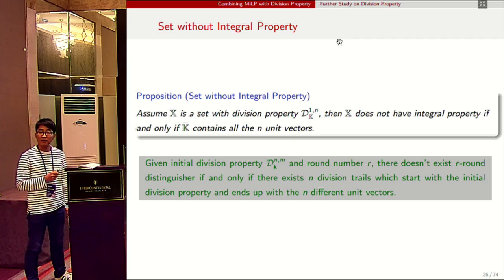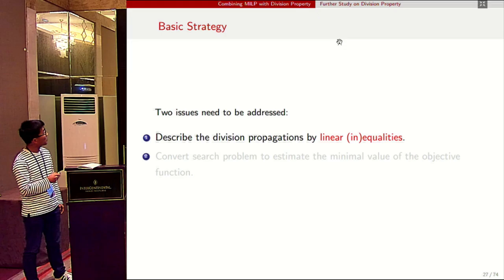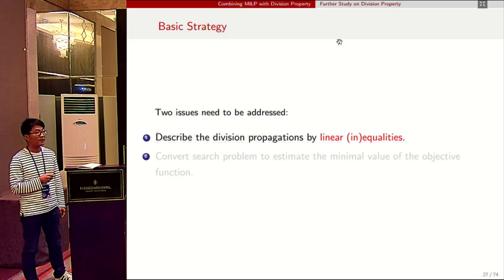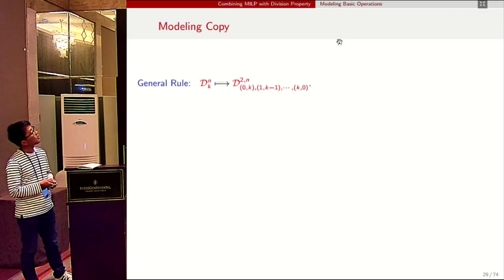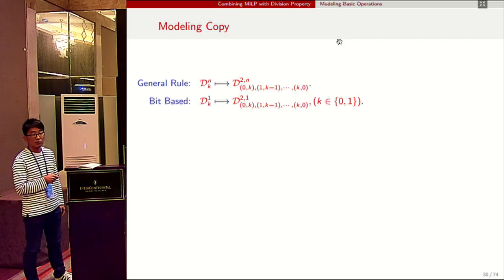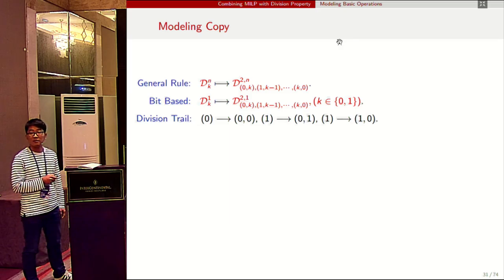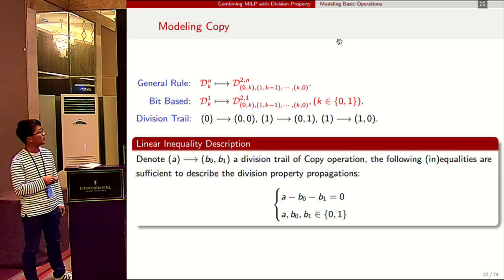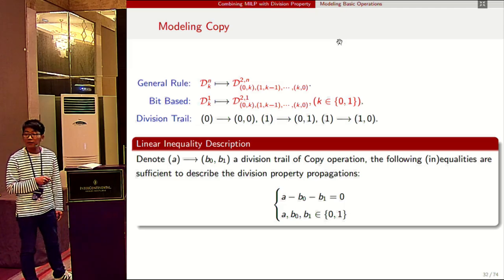So now the problem is clear: we just need to find n division trails. We proceed to the first issue — describing division propagations by linear inequalities — by modeling basic operations used in block ciphers. For the copy operation, based on the bit-based propagation rule where n equals one, we find three division trails. If (a, b_0, b_1) is a division trail of the copy operation, one equality is sufficient to describe these propagations, since all feasible solutions of this equality correspond to the three division trails.